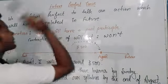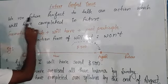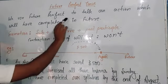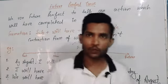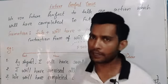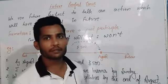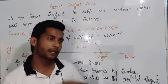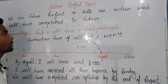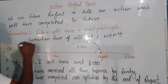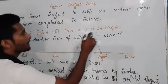We use future perfect tense to talk about an action which will have completed in future. If we use future perfect tense, we try to show that an action will have completed in future at a given time or before a given time. That's how this works. How we form this tense: subject, then 'will have', and past participle.